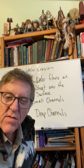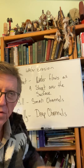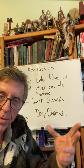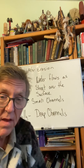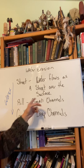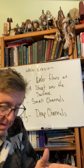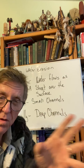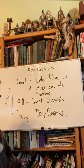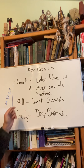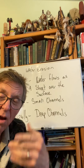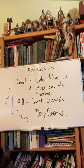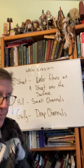Sheet erosion is just what it sounds like — water flowing over the surface of the land as a flat sheet. Over time, if you have a lot of this, you end up with rill erosion, because some places in the surface of the soil are more erodible than others, and you start to get these little channels cut in them. Then over time those small channels become really deep channels, and this is gully erosion.